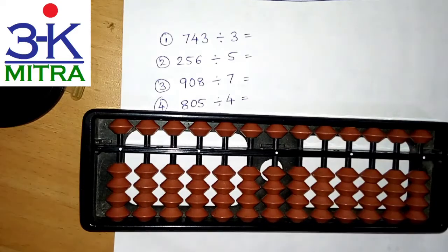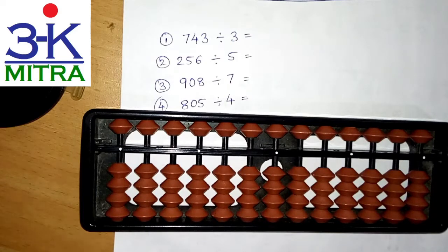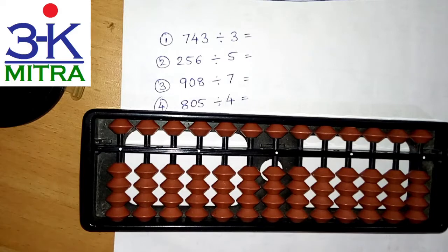Hello everyone. In this video I will be demonstrating a few examples of division on Abacus. Divisor is a one digit number in each case. This is the basic division method. I will be demonstrating it again on request of many subscribers who wanted to see a few more examples.